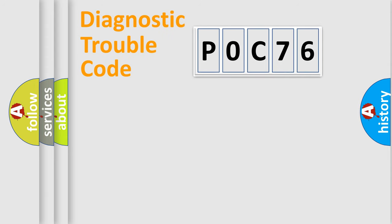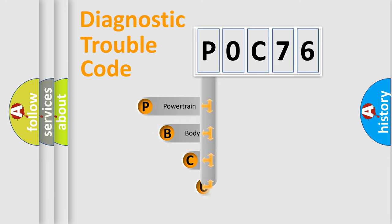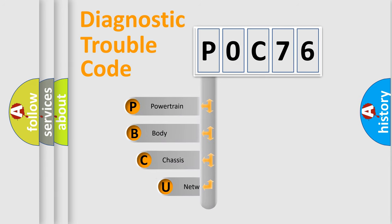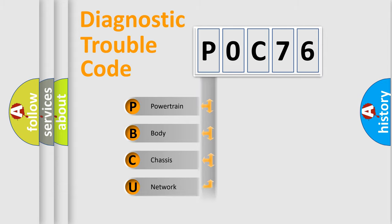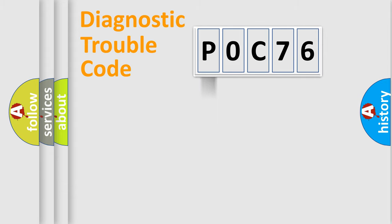Let's do this. First, let's look at the history of diagnostic fault code composition according to the OBD2 protocol, which is unified for all automakers since 2000. We divide the electric system of the automobile into four basic units: powertrain, body, chassis, and network.